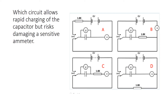Next question: which circuit allows rapid charging of the capacitor but risks damaging a sensitive ammeter? Damaging a sensitive ammeter means we have a really high current, which means we do not pass the charging process through a resistor. We are rapidly charging with no resistor in series with the capacitor during charging, but that means the current could be so high that we damage the ammeter.